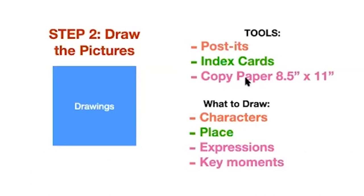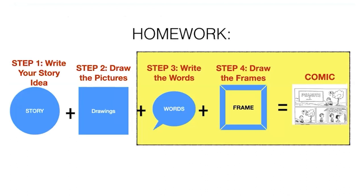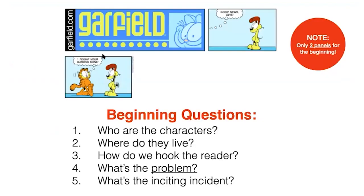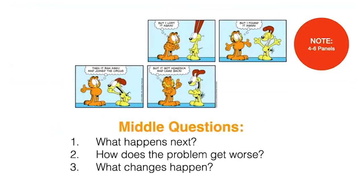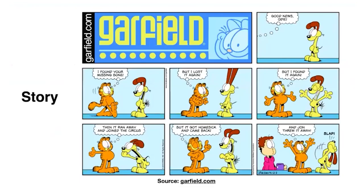You can draw on copy paper, index cards, or post-its. If you use index cards or post-its, you can move them around later — that's a good tip. I'll give you five minutes. Today we went through story structure again — that's the hardest part. For your one-page comic: the beginning is about two panels — the hook and the problem. The middle should be about four to six panels. The end can be one to four panels. Put it all together and you have a one-page comic.